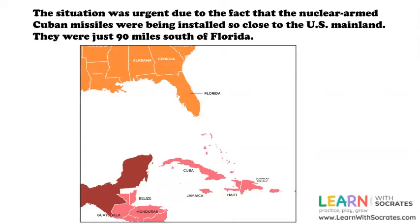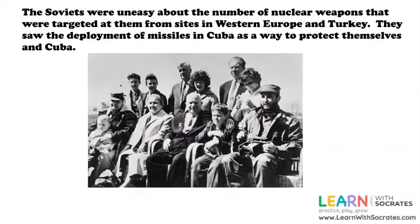The missiles were just 90 miles south of Florida. The Soviets were uneasy about the number of nuclear weapons targeted at them from sites in Western Europe and Turkey, and they saw the deployment of missiles in Cuba as a way to protect themselves and Cuba.